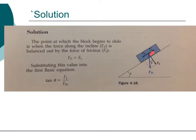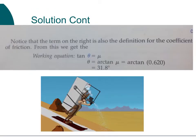In the diagram, we have the block with weight pulling down, the force of the plane, the normal force, and the angle shown. The point at which the block begins to slide is when the force along the incline plane is balanced by the force of friction: force of plane equals force of friction. Substituting values, the tangent of the angle equals the coefficient. Therefore, the angle equals the inverse tangent of 0.620, giving an angle of 31.8 degrees.